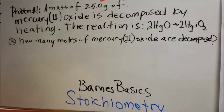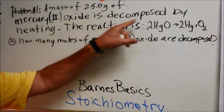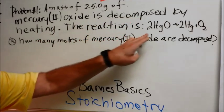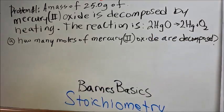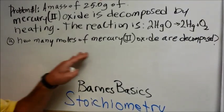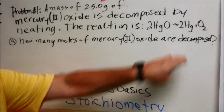A mass of 25 grams of mercury(II) oxide is decomposed by heating. The reaction is 2HgO yields 2Hg and 1O₂. How many moles of mercury(II) oxide are decomposed?